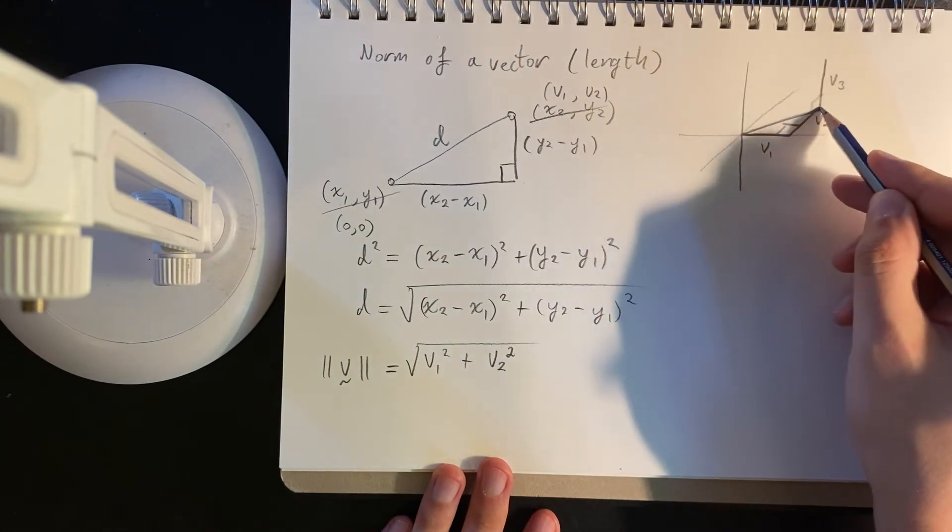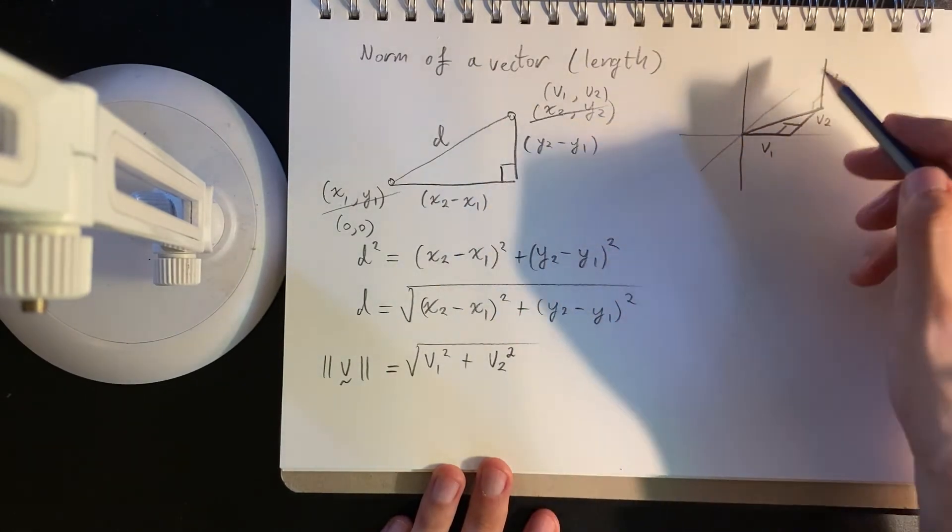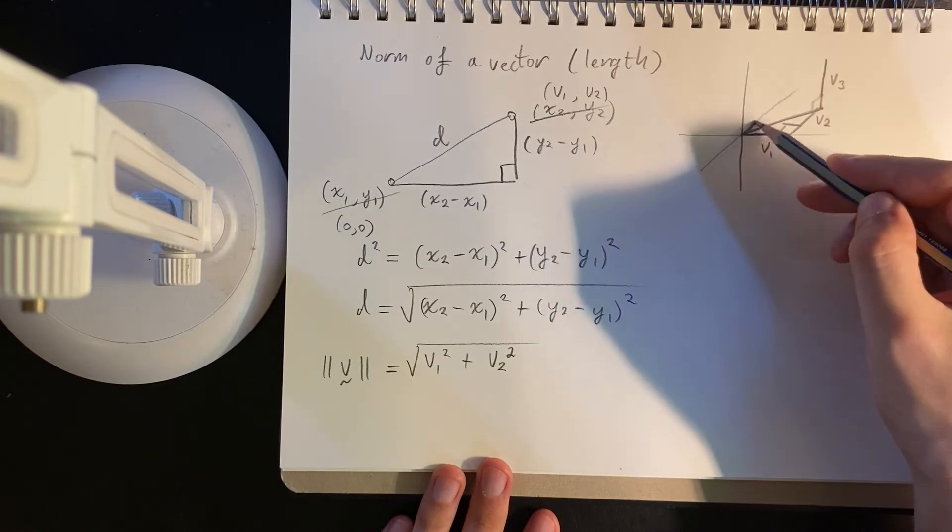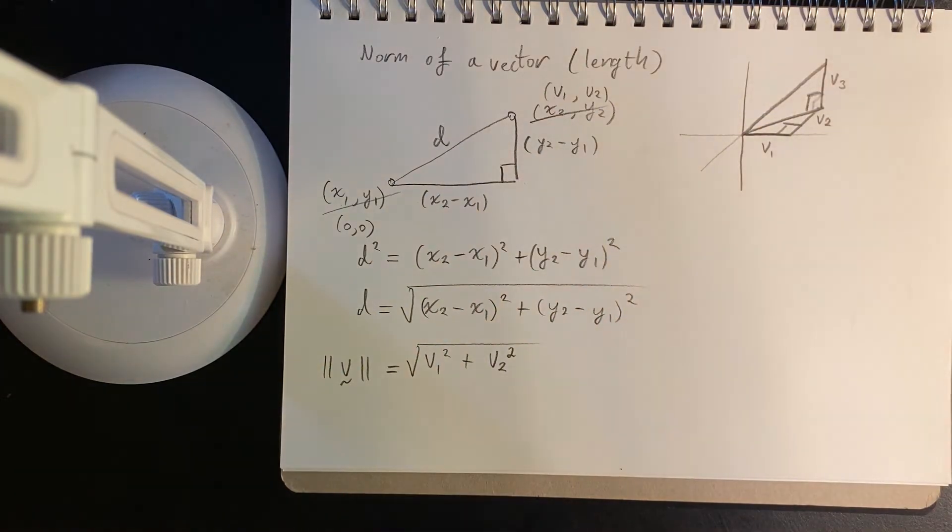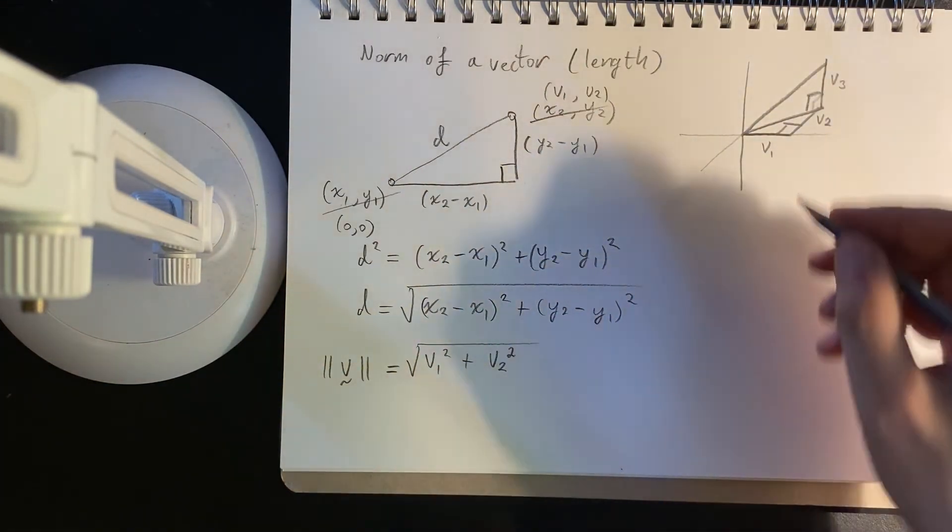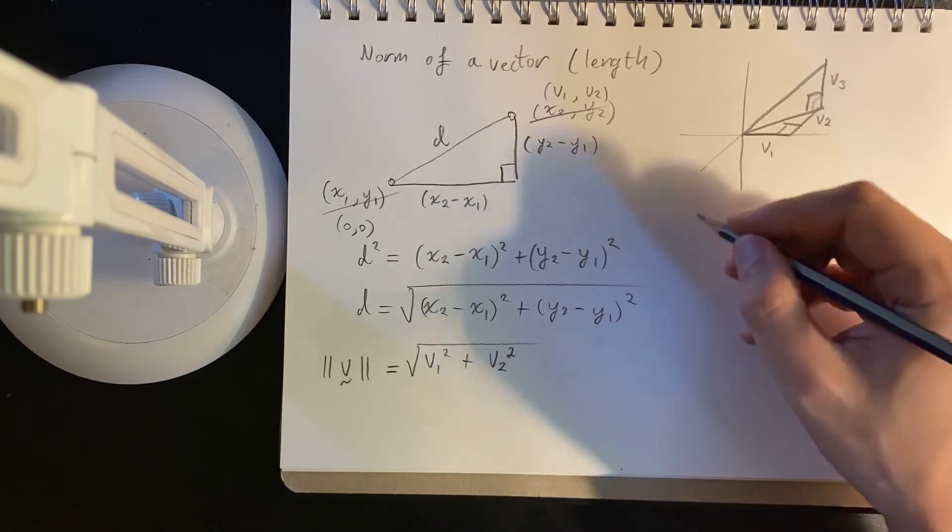So what we'll do, so we'll take this hypotenuse here, and then run up, and we are perpendicular to the hypotenuse.